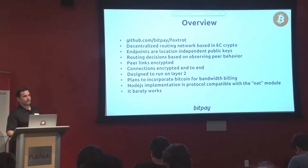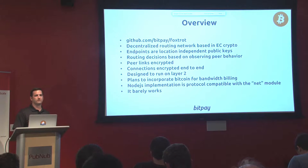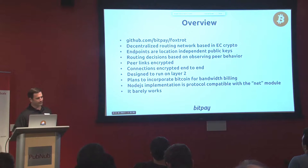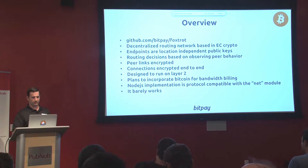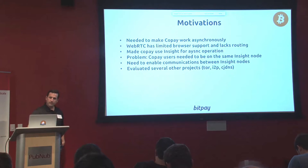We have plans to incorporate Bitcoin for bandwidth billing, but that's not implemented yet. We built all this on top of Node.js and designed it to be protocol-compatible with the Net module — how you create sockets or interface with the socket layer in Node.js. So you can very easily swap out a Foxtrot connection in place of a regular socket connection. And then the last point — it barely works. We're just working on solving all the issues to make it work with Insight right now. Just a couple of days ago we got it working with Insight, getting two co-payers to use two different Insight nodes to coordinate a multi-signature payment proposal.